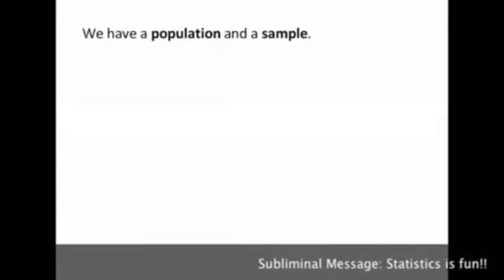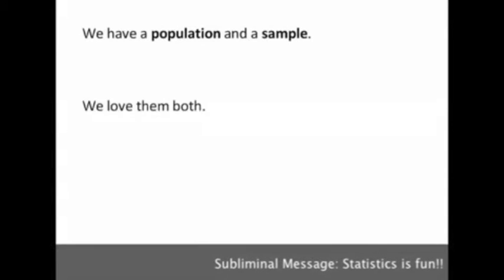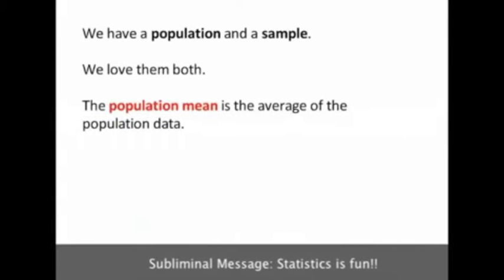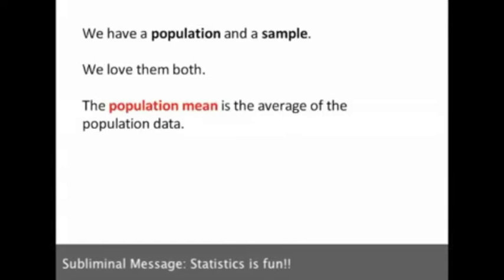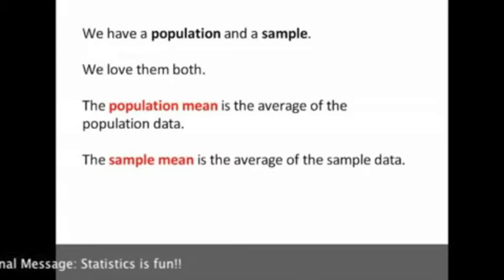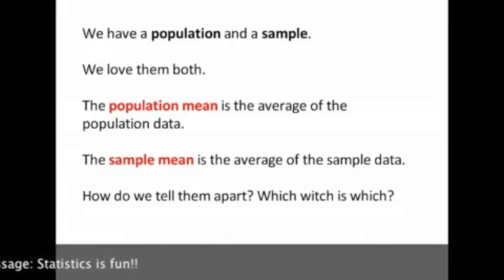Well, what do you know? We have a population and a sample. You will recall that the population is the universe of all items of interest, and a sample is a subset of the population. We love both the population and the sample. We have a population mean, which is the average of the population data, and a sample mean, which is the average of the sample data. So now we have two means — how do we tell them apart? Which is which?